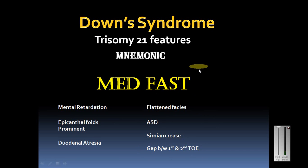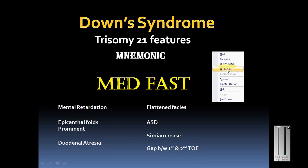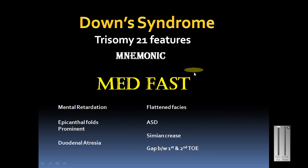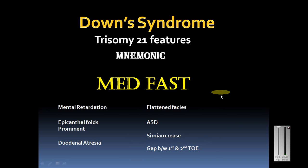So I hope you don't forget these two mnemonics. The four A's of Down syndrome are ASD, ALL, Alzheimer's disease, and duodenal atresia. The main features of Down syndrome — including mental retardation, epicanthal fold prominence, simian crease, and others — can be remembered through MEDFAST.